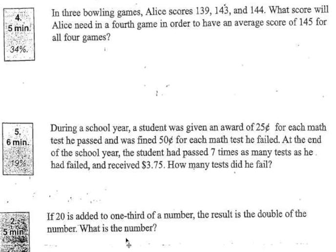Alright, let's look at the first problem. In three bowling games, Alice scores 139, 143, and 144. What score will Alice need in a fourth game in order to have an average score of 145 for all four games?